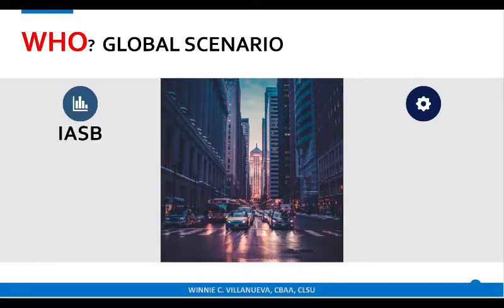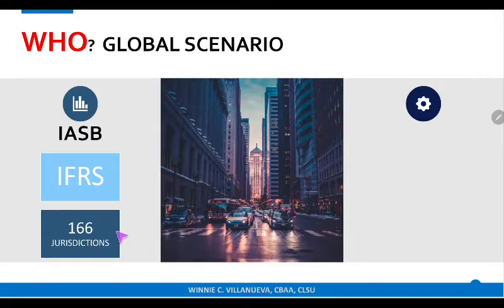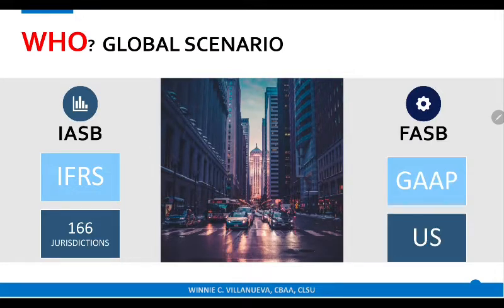The IASB is the one who made the International Financial Reporting Standards, and it is currently used by 166 jurisdictions or countries. As for the FASB, it issues the Generally Accepted Accounting Principles, or GAAP.